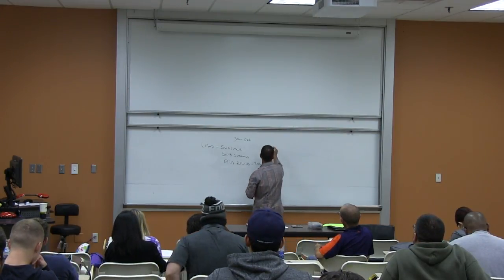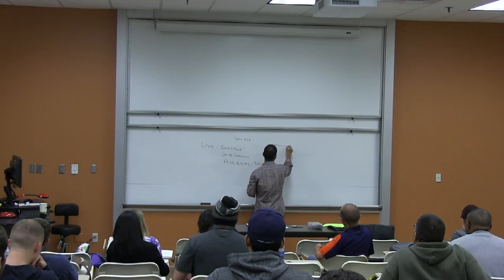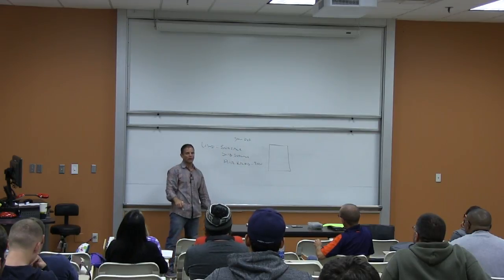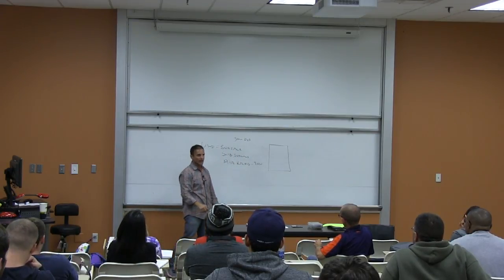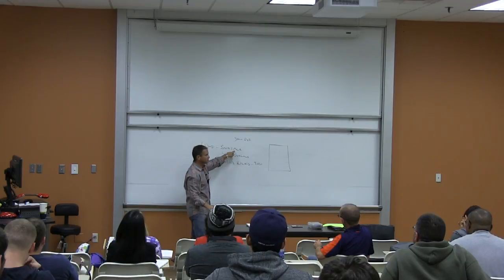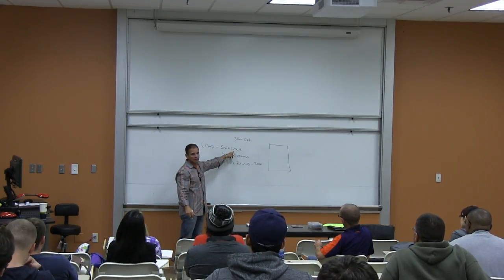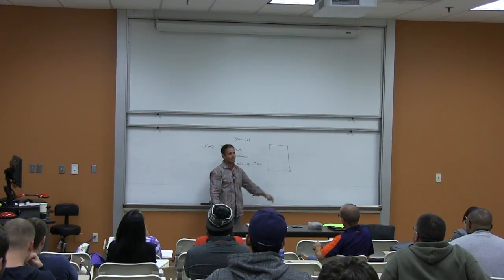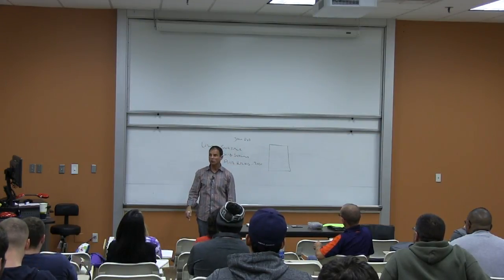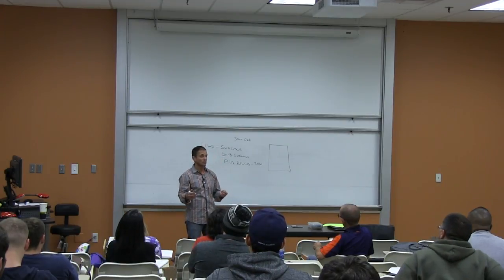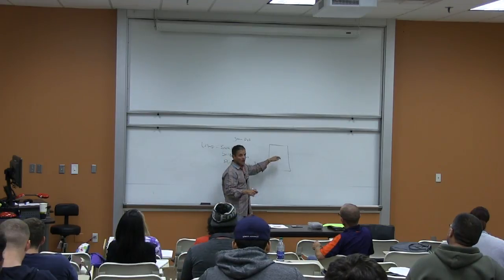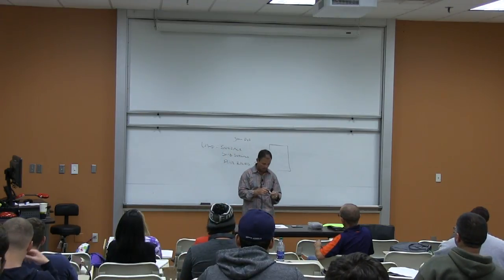Number five: hereditaments — an inheritable right, or anything that can be inherited, whether real property or personal property. If you own land, you could will that land, or the surface rights, subsurface rights, air rights, or improvements to your heirs. A hereditament is any sort of inheritable right, whether you're willing real property or personal property.